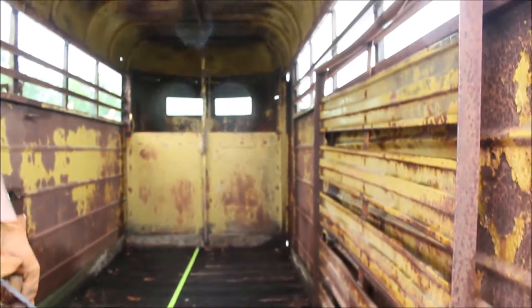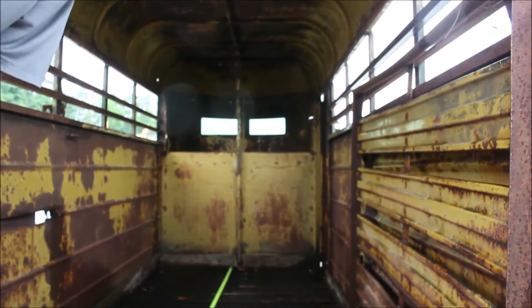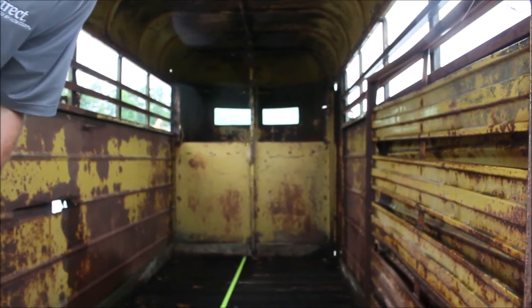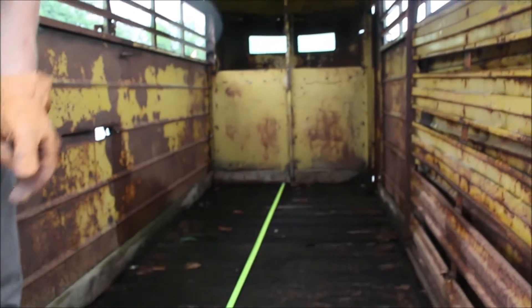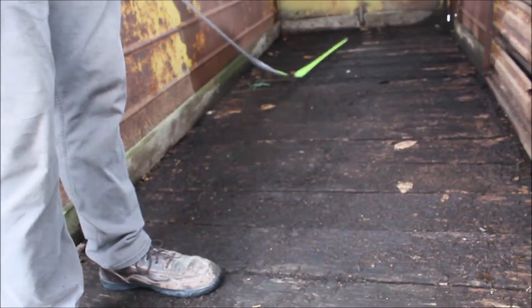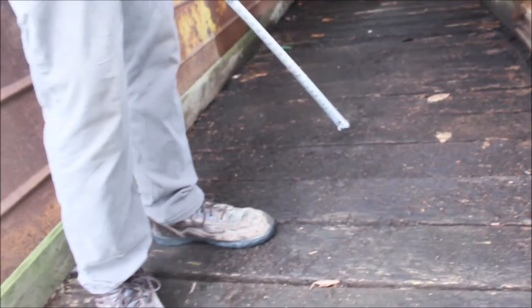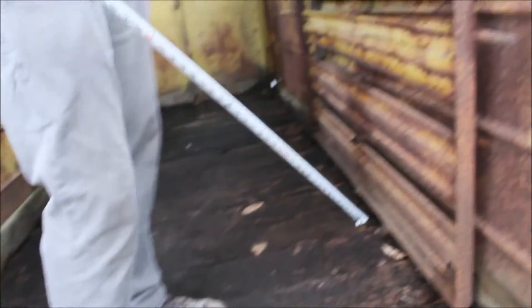They probably call this a 16-foot trailer because of the front, but the actual space inside of it is 13 and a half feet from the front where you would put the hay. It does have a cut gate in it.